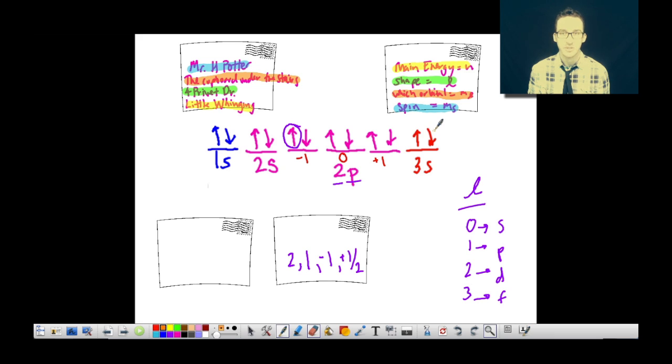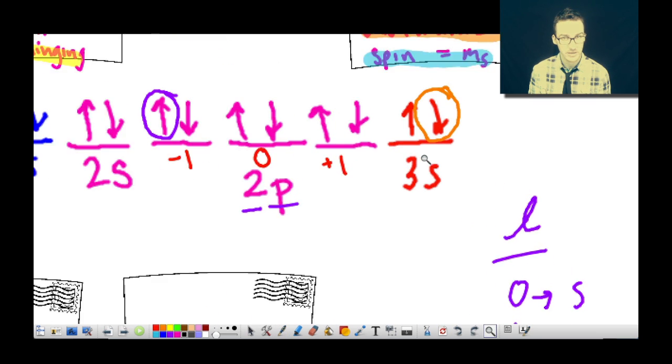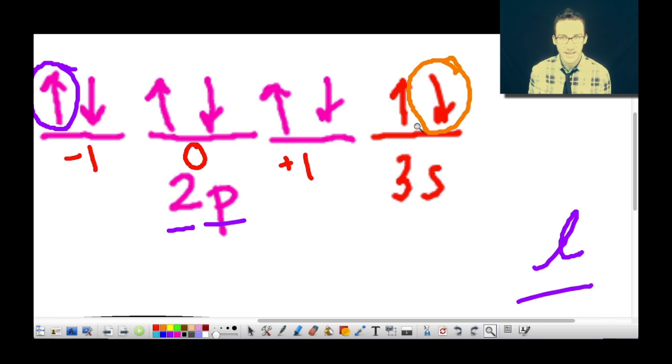So let's pick another one. I'm going to choose this one here. This electron is in the third main energy level. It's in an S shape orbital. The S shape orbital corresponds to an L value or an angular momentum value of zero. As you think about the orientation or which 3S orbital, let's take a look. There's only one 3S orbital.